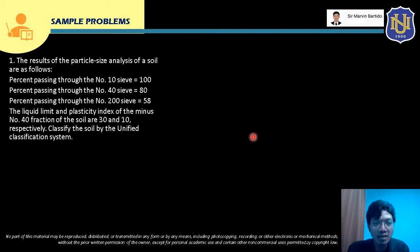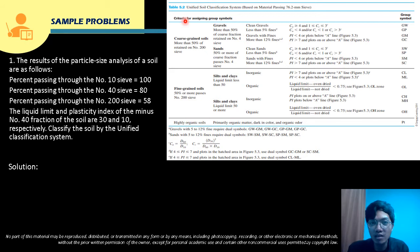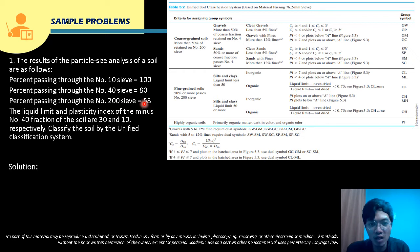The 'minus No. 40' means the fraction passing through sieve No. 40. The liquid limit is 30 and PI is 10. For our solution, we use Table 5.2. First, we check percent passing No. 200 sieve = 58%. Since 58% is 50% or more, the soil is fine-grained.